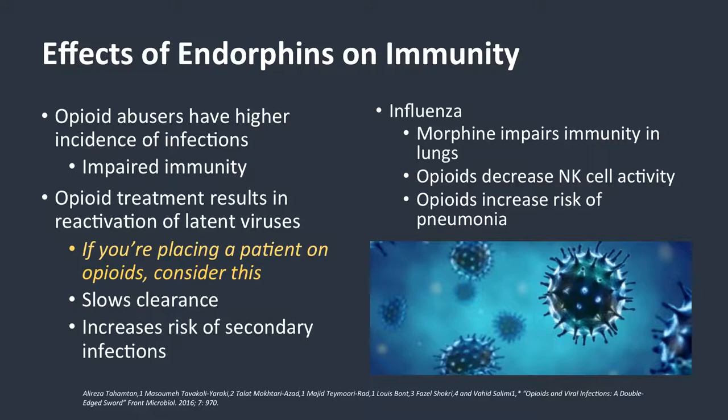Flu is highly relevant right now — it's an interesting flu season with our H3N2 flu that's circulating. We know that morphine is really inhibitory for immunity in the lungs. Opioids also decrease NK activity, which is super important for fighting flu, and it increases the risk for secondary infection of pneumonia. So, people who are on opioids are necessarily going to have a stronger flu response.